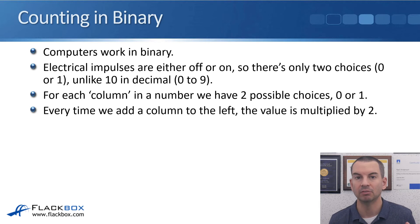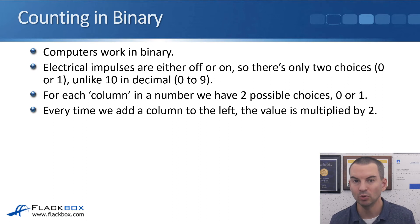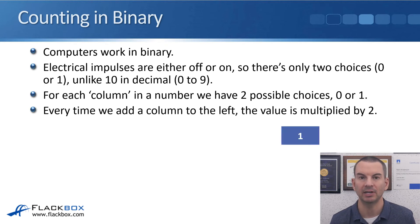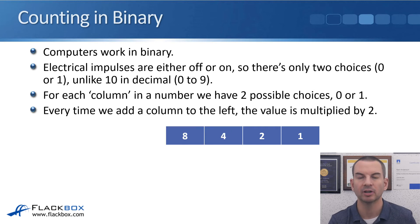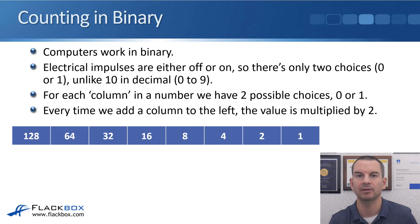Every time we write down a number in binary, for each column we've got two possible choices — a 0 or a 1 — rather than 0 through to 9. And every time we add a column to the left, the value is multiplied by 2, rather than 10. So looking at the columns in binary: we've got a 1 on the furthest right, then 2, then 4, then 8 — just doubling each time — then 16, 32, 64, 128, 256, 512, and so on.